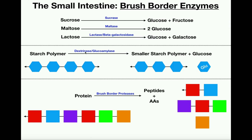Dextrinase and glucoamylase are technically different in their mechanism, but for the purposes of anatomy and physiology, we treat them as acting together. What they do is break off glucose monomers from starch polymers. The starch polymers are far too large to absorb, so we have to break them into glucose monomers that can then be absorbed.